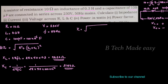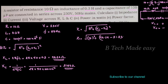Z is equal to root of R square plus XL minus XC whole square. In our convention, inductive reactance has a positive value and capacitive reactance has a negative value. So Z is equal to root of 10 square plus 94.24 minus 31.83 whole square. XL is positive and XC is negative, and when added we get the net reactance.